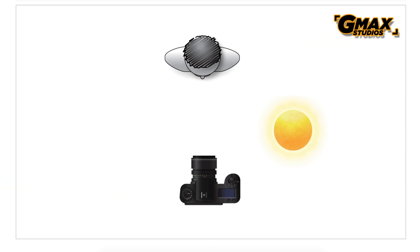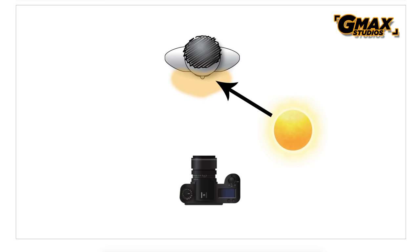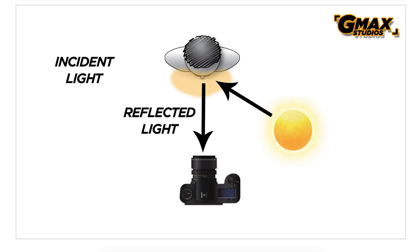Before we understand metering, let us take a look at what is incident light and what is reflected light, because this is very important to know how the camera reacts and thinks in a particular situation. If you've seen episode 1, you know that the light hits the subject and enters the camera — that is how a photograph is made. The light that hits the subject is called incident light, and the light that is reflected off the subject is called reflected light.